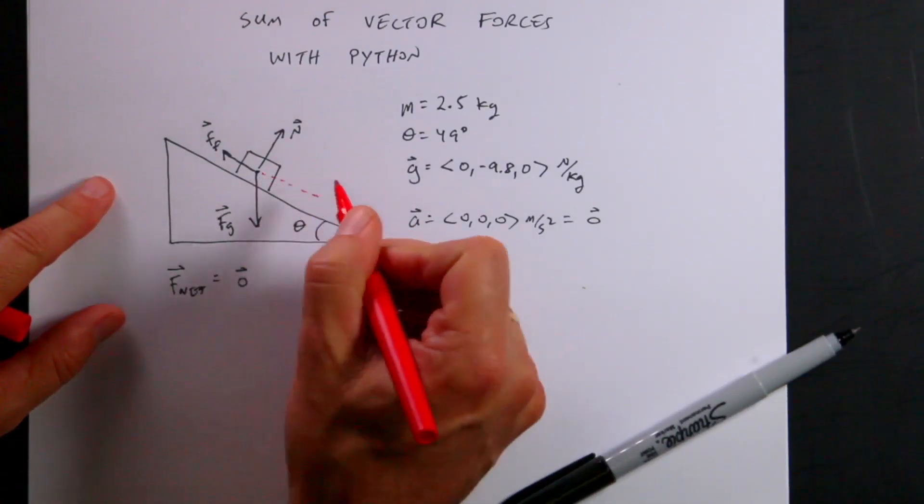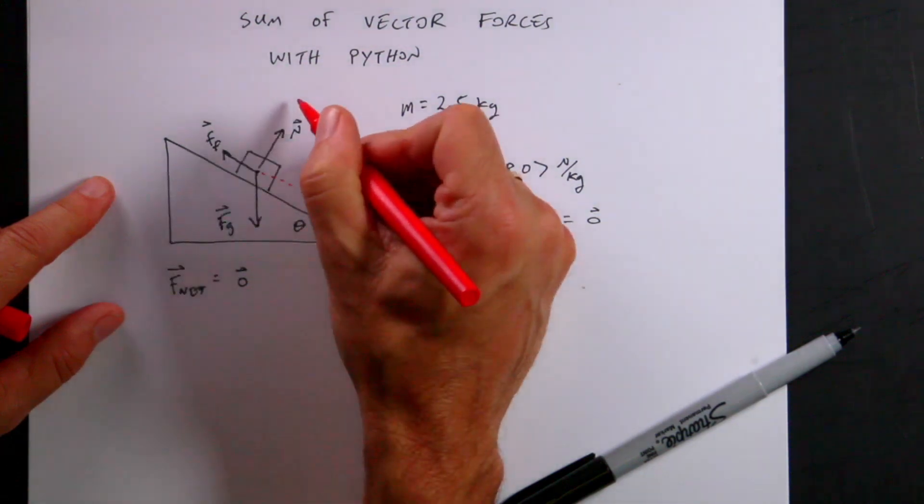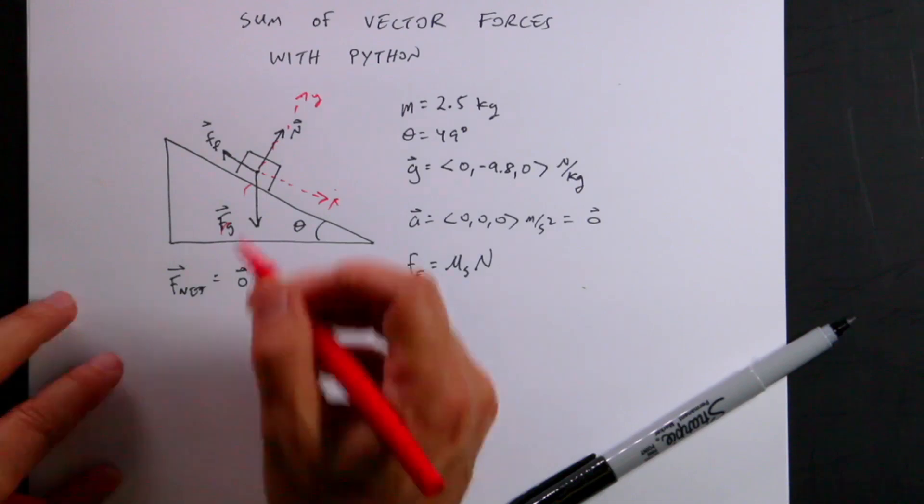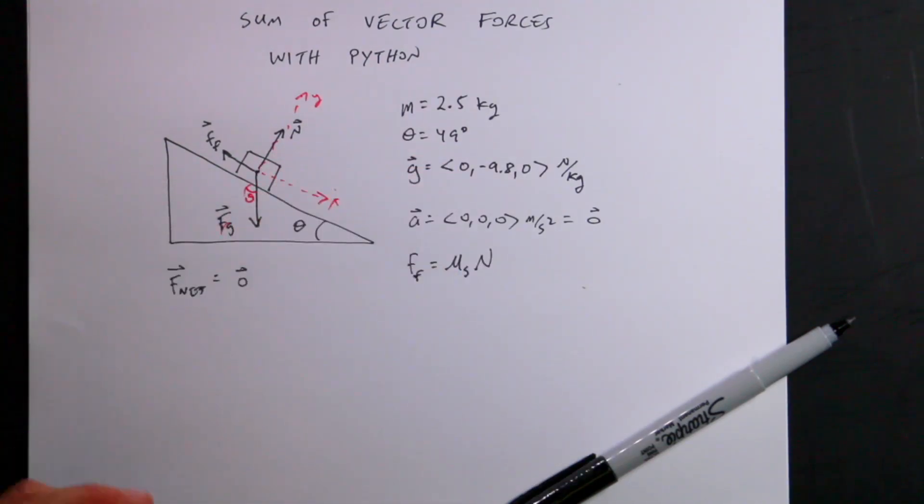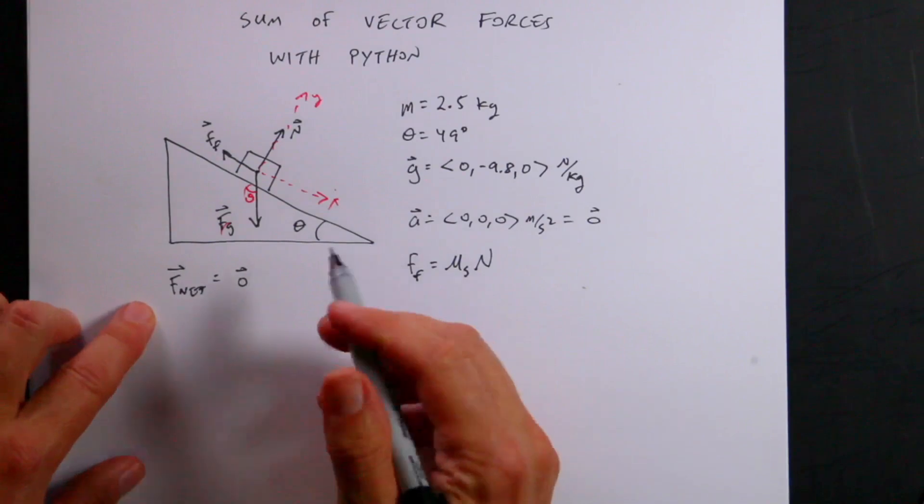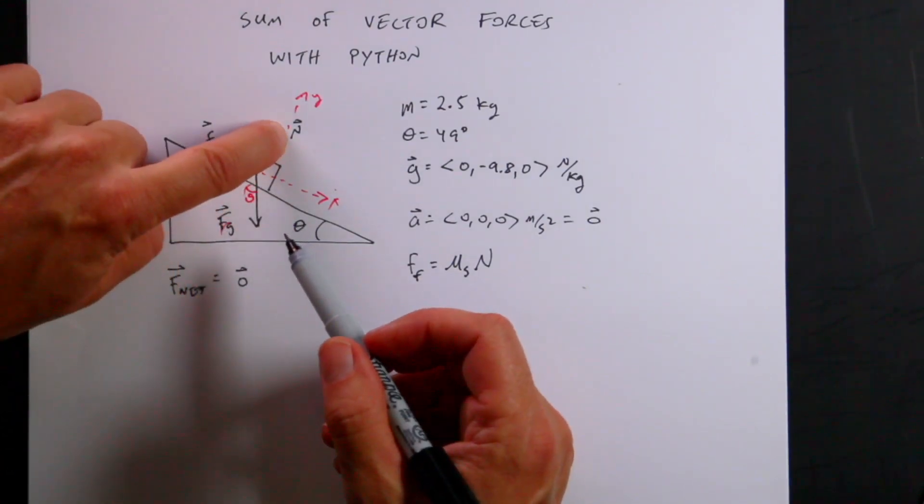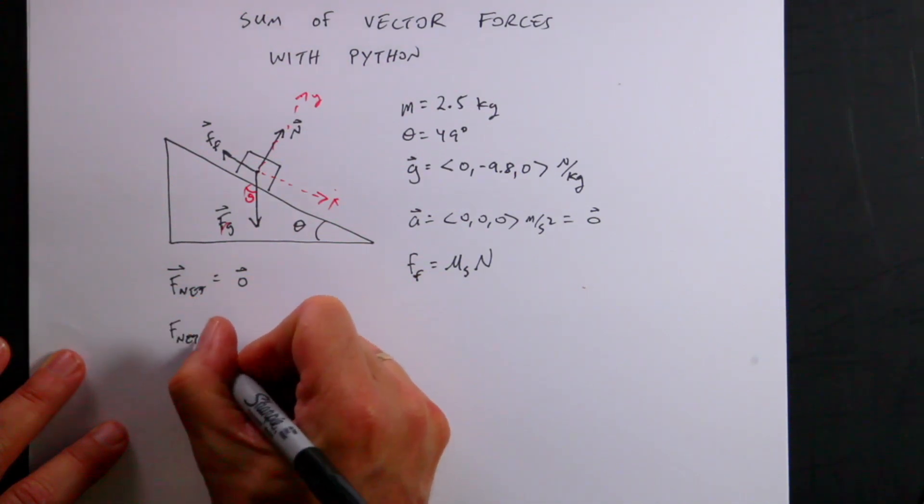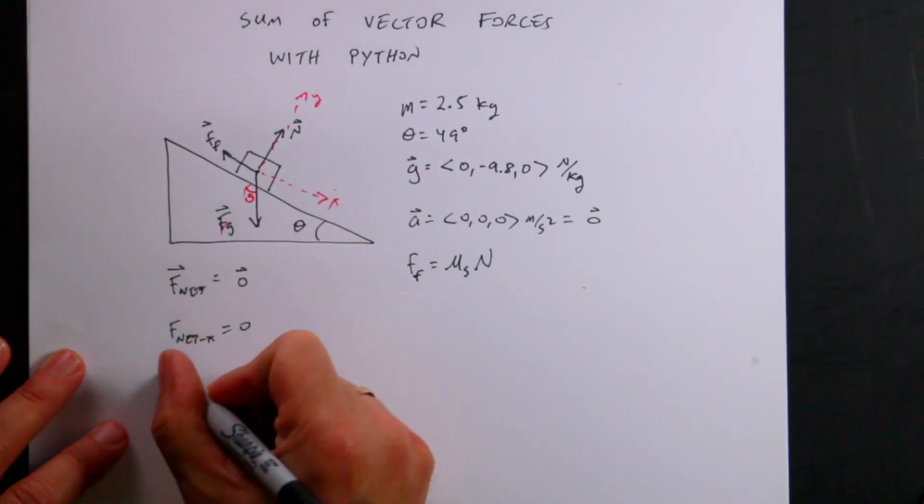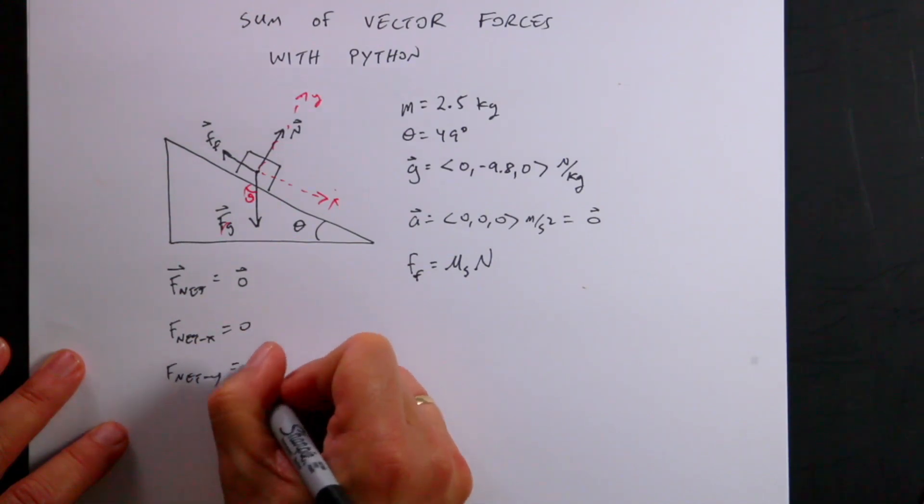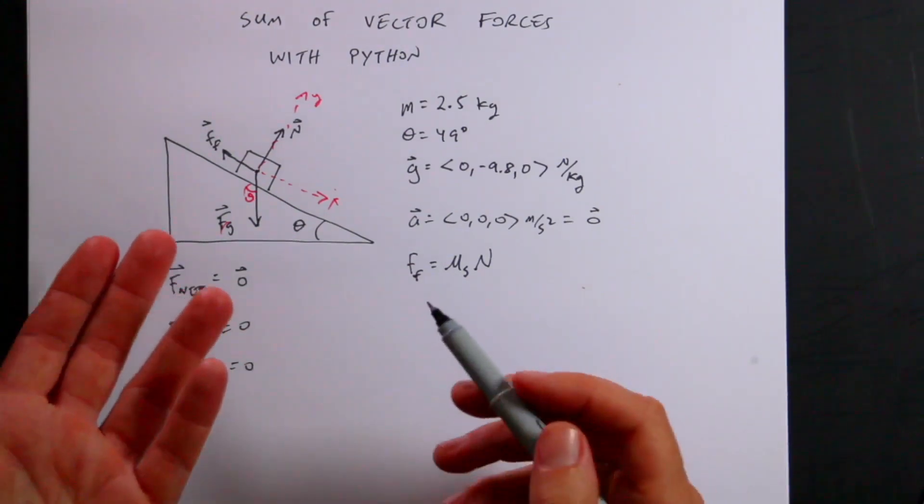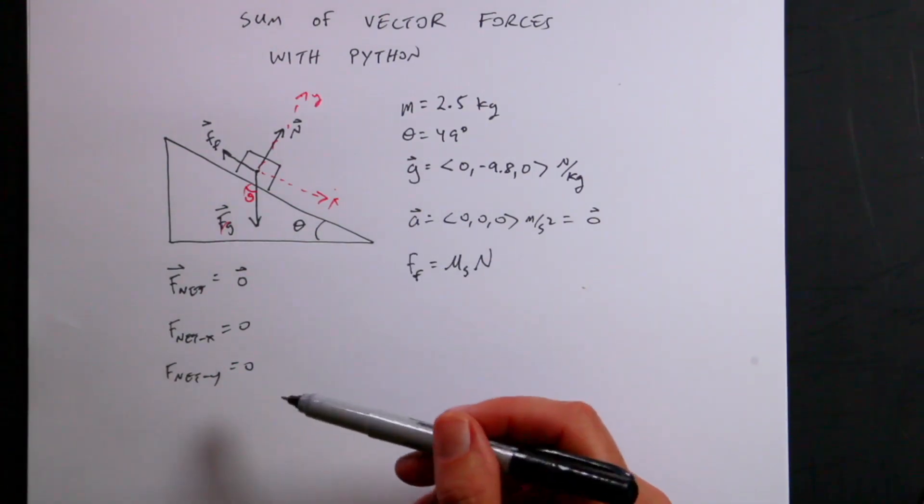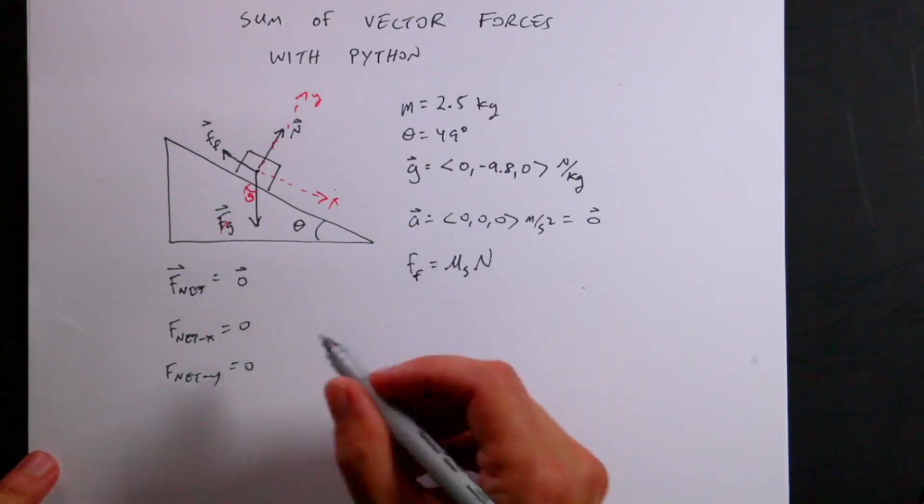So the next thing I need to do is pick my x and y axis. And we're going to do it like this. That's my x direction. That's my y direction. So if that's the case, then this is the angle theta. And so I want to write this in two dimensions. F net x is equal to 0, F net y is equal to 0. If it has a 0 net force and the total net force is 0, then the x net force is 0 and the y net force is 0. And the z too, but I don't really care about the z.